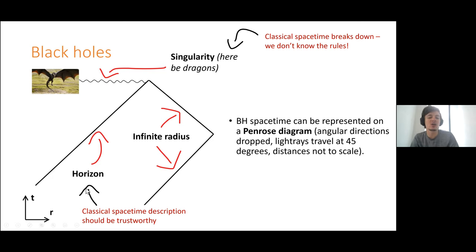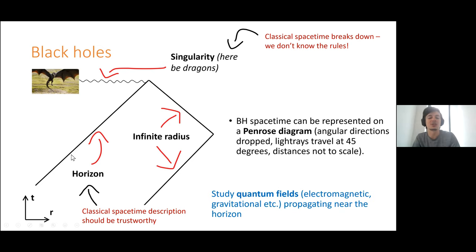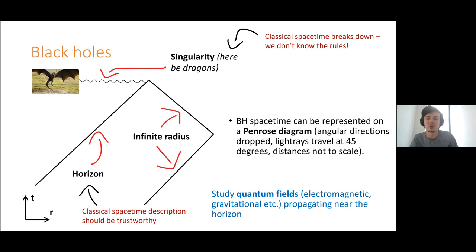Importantly for a big enough black hole at the horizon, there's nothing too crazy going on locally. If you fall into a super massive black hole, you probably won't even notice you're passing the horizon. Our classical spacetime descriptions and ordinary quantum field theory should be trustworthy. All the calculations I'm going to be talking about today use this physics of stuff near and just inside and just outside the horizon. In particular, we're going to study the quantum fields near this horizon — electric fields, magnetic fields, gravitational fields — all quantum fields propagating near the horizon.